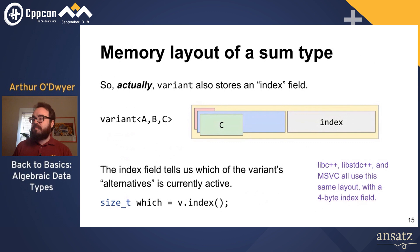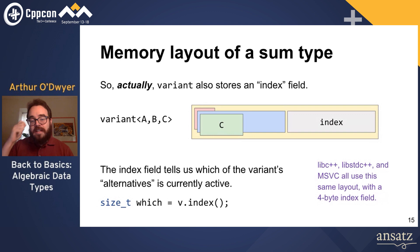Variant has to store an index field that tells it which of its alternatives is currently active. You can access this via the index() member function, which returns a size_t: 0, 1, or 2, corresponding to the order of template parameters. So 0 means A, 1 means B, 2 means C.